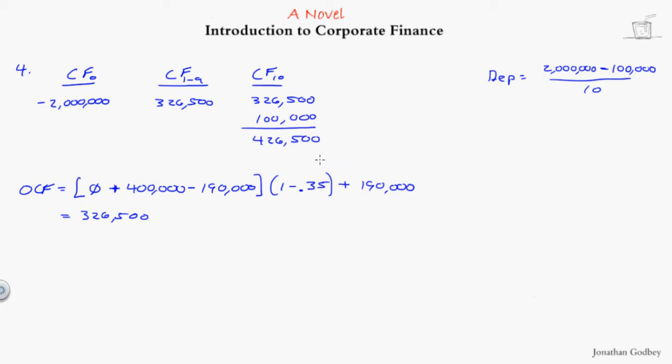We can stop at this point and do the internal rate of return. All we have to do is say, this is cash flow zero, minus $2,000,000. Cash flow one, $326,500. It happens nine times. Cash flow two is $426,500. It happens once. And, now you can compute the internal rate of return.